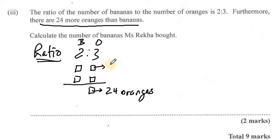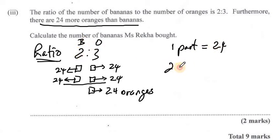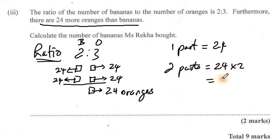So this box will have 24 oranges, this box will have 24 oranges, this box will have 24 bananas, and this box will have 24 bananas. Remember, each part has the same amount. Since one part is equal to 24, and Ms. Rekker bought two parts of bananas, in two parts we'll have 24 times 2, and so she would have bought 48 bananas.